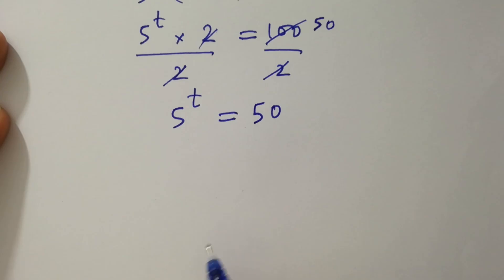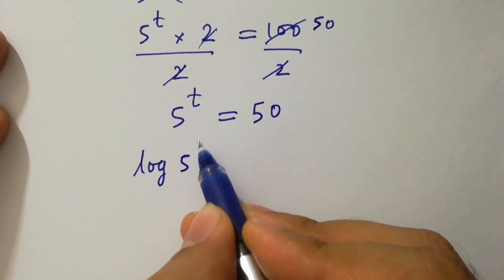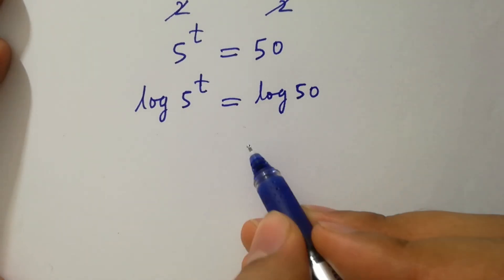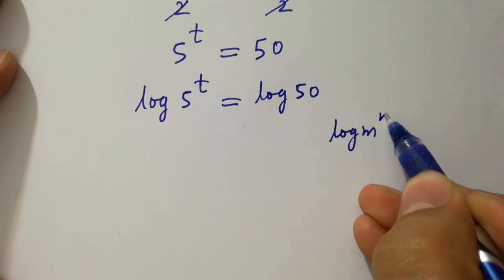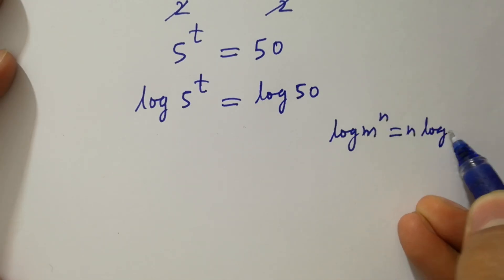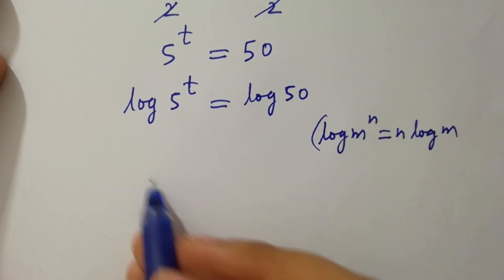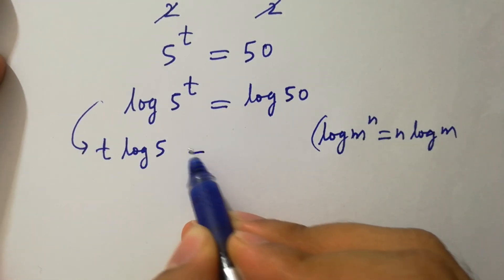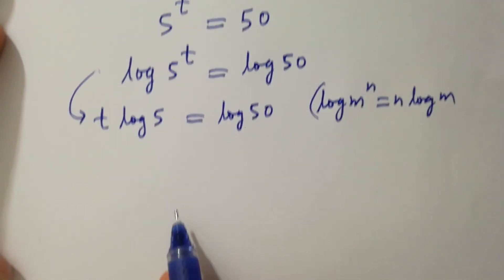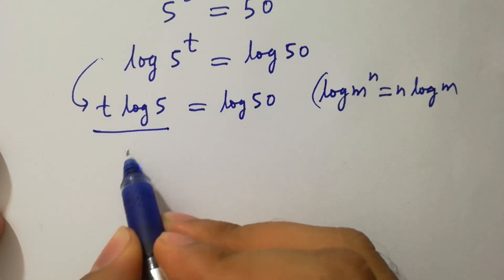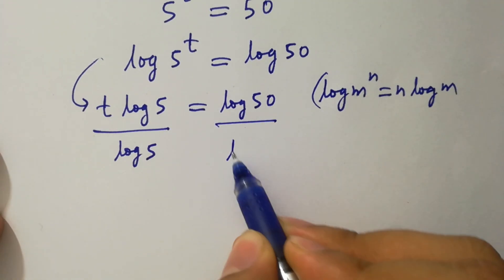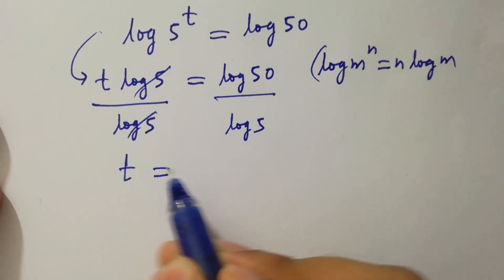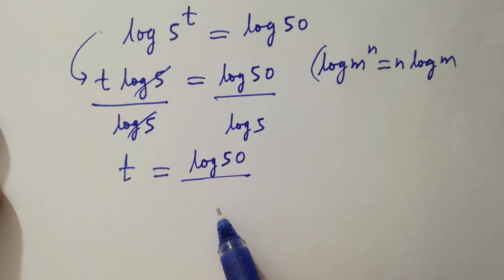To solve this, take log on both sides: log of 5 to the power t equals log 50. Since log m to the power n equals n log m, it will be t log 5 equals log 50. To cancel log 5, divide both sides by log 5, giving t equal to log 50 over log 5.